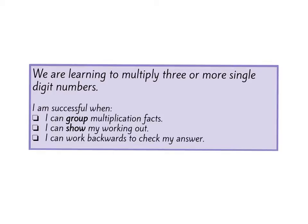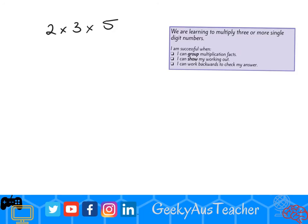I'm successful when I can group multiplication facts, I can show my working out, and I can work backwards to check my answer. So I have a multiplication fact here and it's two times three times five.